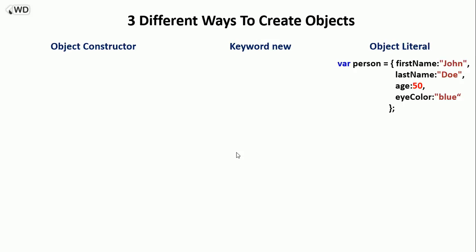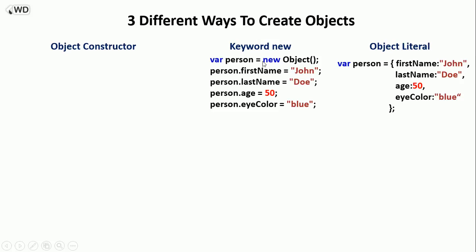The second way is using the keyword `new`. We say: var person = new Object(); then we add values by saying person.firstName = 'John', and so on. First name, last name, age, and eye color are all properties added this way. But don't use the keyword `new` — use the object literal instead, because the object literal executes faster.